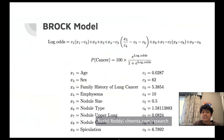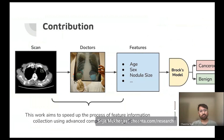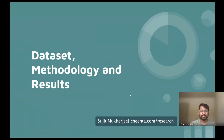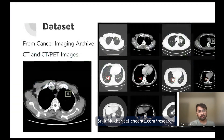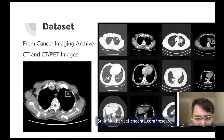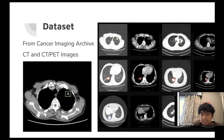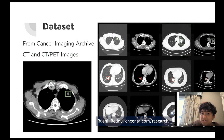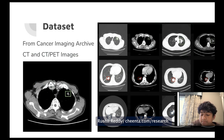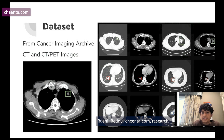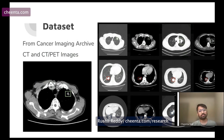Regarding whether spiculation can be detected on a PET scan — it's harder, but you can still see the abnormalities growing out of the nodule. The CT scan makes it much easier to detect. The project uses both CT and PET scans; it's compatible with both, just requiring slightly different code for each.